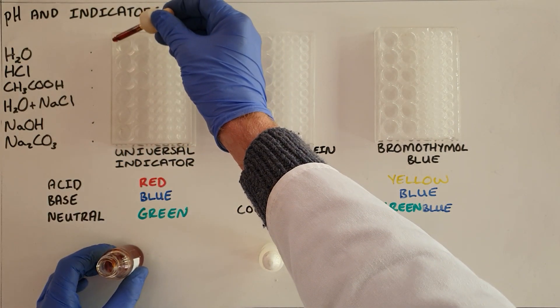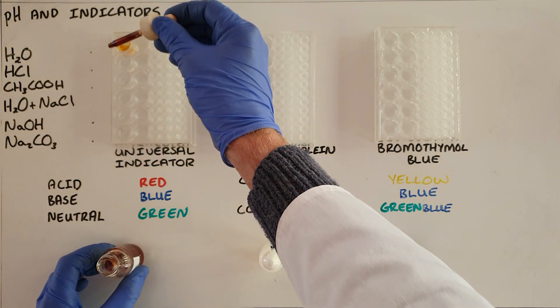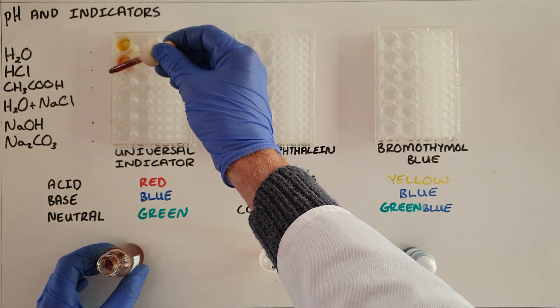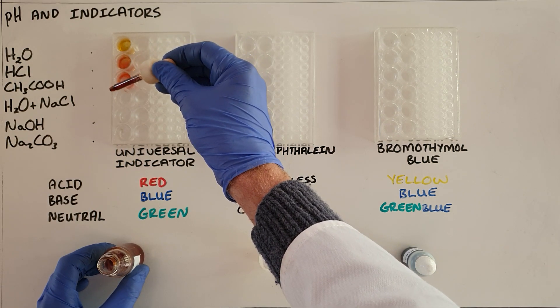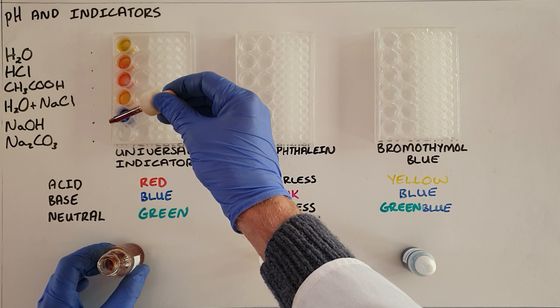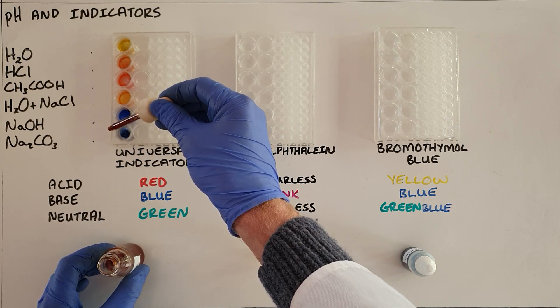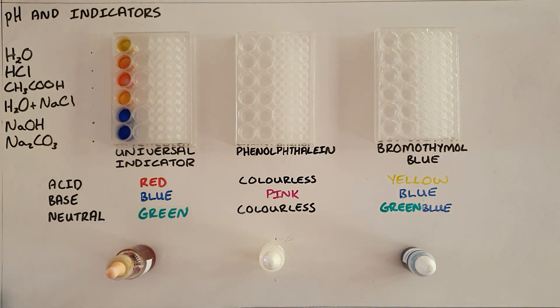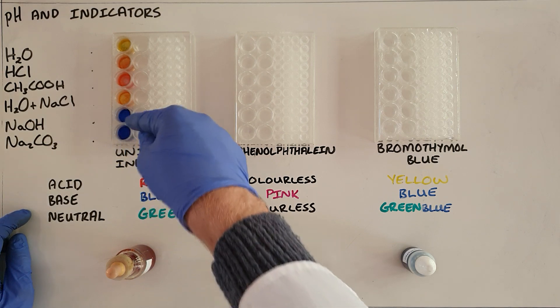So we see that we add one drop of each of the universal indicator to each well in the combo plate and we can see some of them have immediate color changes. We can see that our two substances sodium hydroxide and sodium carbonate which we know to be bases, we can see that they immediately turn blue.